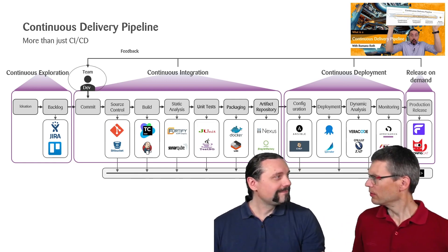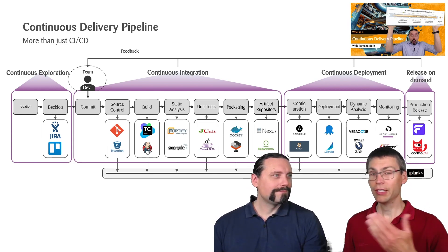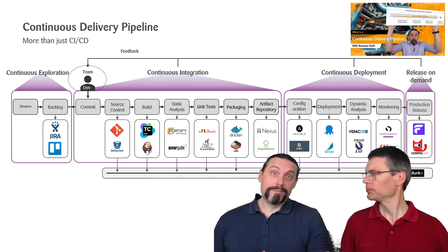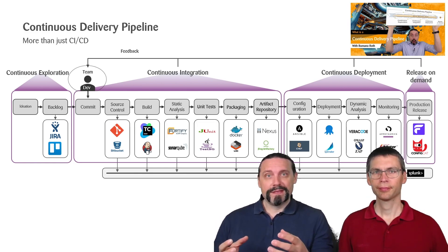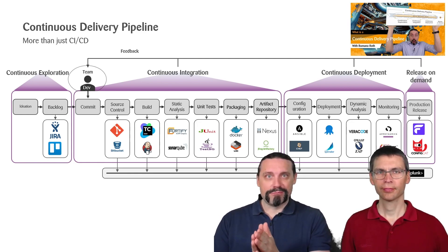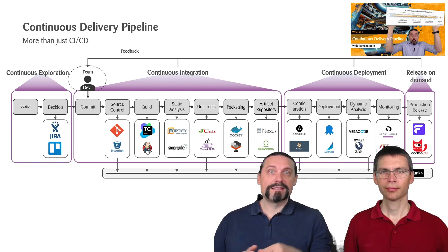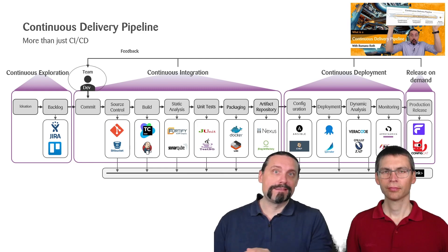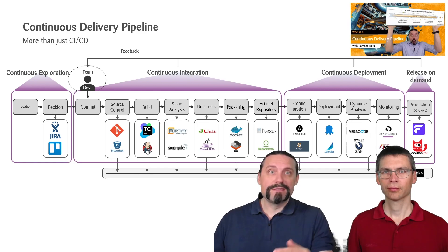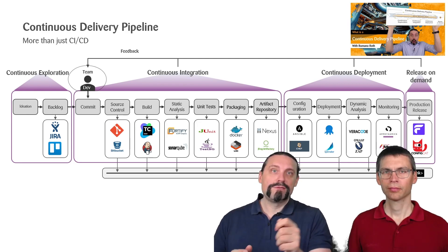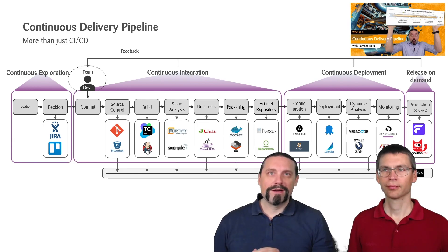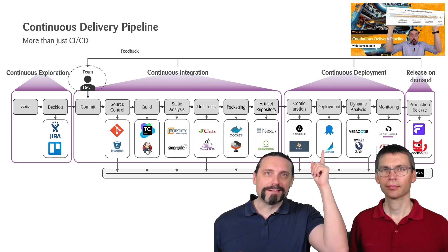Excuse me. We learned we have continuous deployment, which means we release to production. And now we have another step: release on demand. Why is that? One of the fundaments of DevOps is that we separate deployment from release. Deployment is bringing the compiled code into production with the feature toggle off. The release is enabling the feature toggle. This enables continuous deployment of changes into production, and when the business says it's the right time, we go into release on demand to enable the feature. If you want to know more about the continuous delivery pipeline, I have created this video up there.